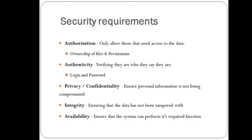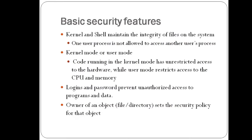You have privacy and confidentiality. It ensures personal information is not being compromised. Integrity means ensuring that the data has not been tampered with and nobody has access to that data. Availability is ensuring that the system can perform its required function.